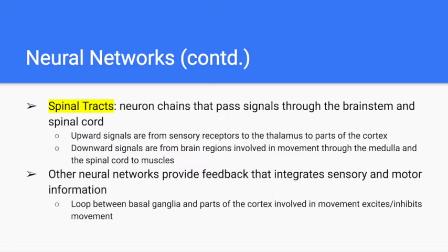Other neural networks provide feedback that integrates sensory and motor information. An example of this would be a loop between the basal ganglia and parts of the cortex involved in movement to excite or inhibit movement.